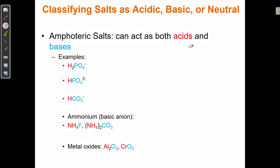Some anions are both acids and bases at the same time — we call those amphoteric. When we have a polyprotic acid like H₃PO₄, it loses an H to become H₂PO₄⁻, which loses another H to become HPO₄²⁻, and then loses another to become PO₄³⁻. The species in the middle of this dissociation series are both acids and bases.